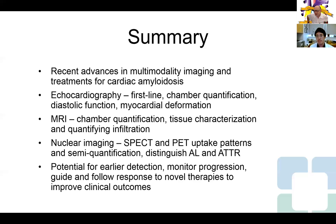Yesterday was probably our 1,600th technetium pyrophosphate scan done at the Cleveland Clinic in the past nine years, and I happened to be reading it. A fascinating case: a person who's never had any issues with heart failure, with a completely normal EKG, completely normal echocardiogram including tissue Doppler and global strain, completely normal MRI, bilateral carpal tunnel, and a rare genetic variant of familial amyloidosis. They did a nuclear scan — technetium pyrophosphate — and it was strongly positive. That makes me think about the sensitivity of everything we do when we identify these patients early.